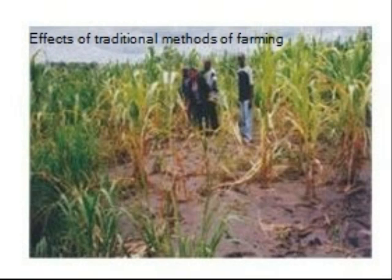The weather pattern in Chisomo causes two extreme conditions in the upper land and lower land, resulting in either drought or floods which damage crops. As a result, people resort to poaching from the nearby Luangwa South National Park and intense fishing using illegal methods.